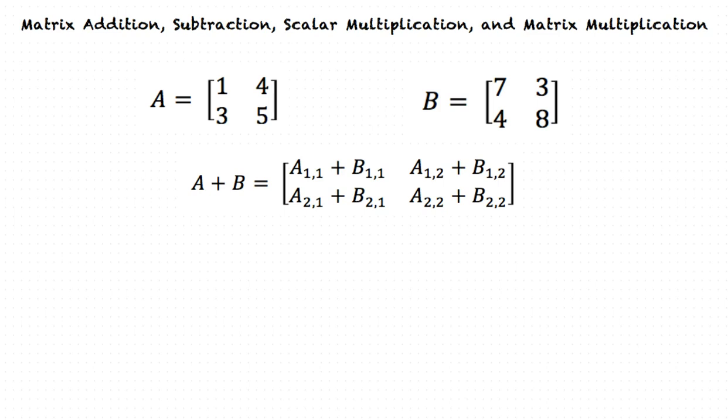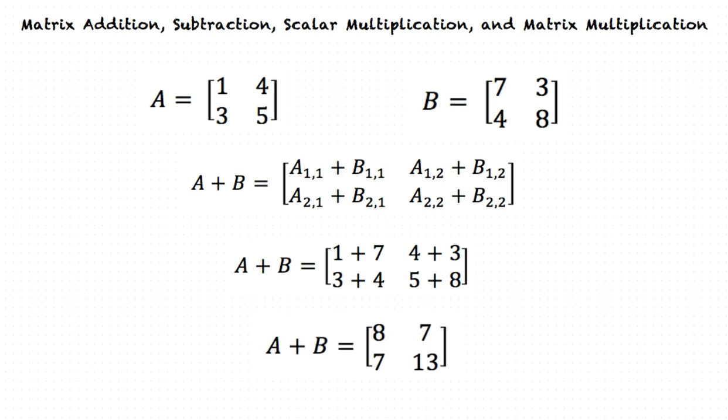Since this is the form of addition we must follow, we can now insert our values and solve. When we substitute in the values, we will have A plus B equal to Row 1: 1 plus 7, 4 plus 3; Row 2: 3 plus 4, 5 plus 8. This results in A plus B equal to Row 1: 8, 7; Row 2: 7, 13. This will be our final answer.